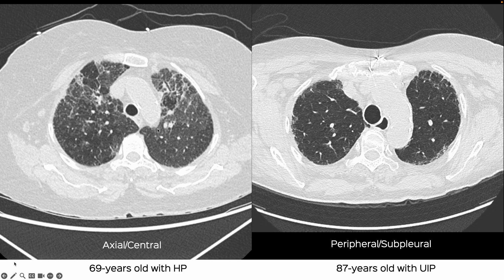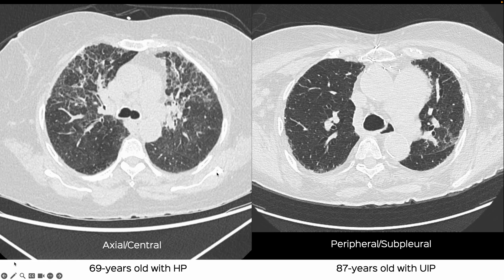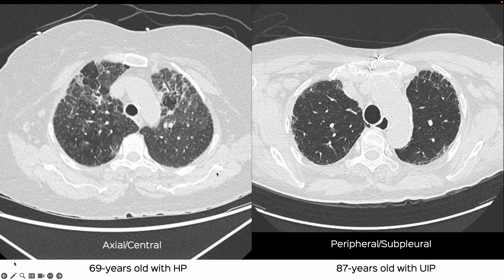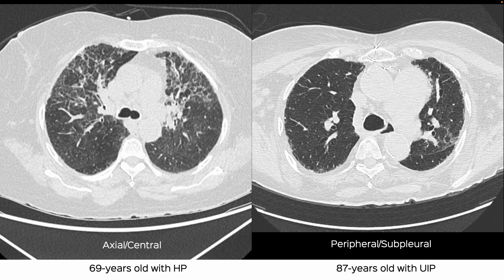Both were opinion scans done elsewhere. On the left is a 69-year-old with hypersensitivity pneumonitis; on the right is an 87-year-old with a known UIP pattern on follow-up. I've brought them together for comparison.